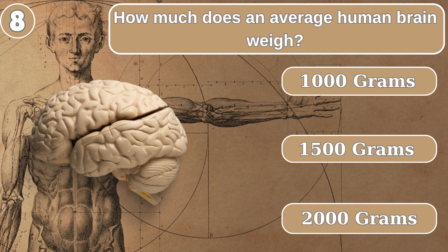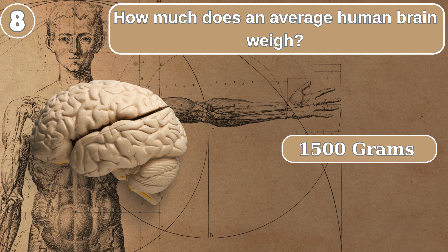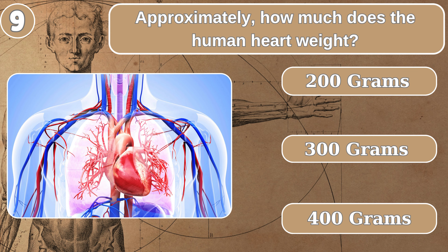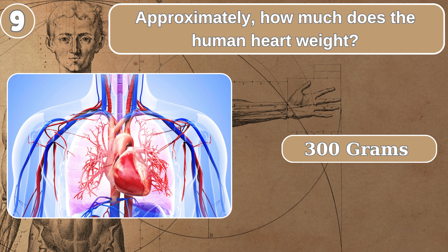How much does an average human brain weigh? 1,500 grams. Approximately how much does the human heart weigh? 300 grams.